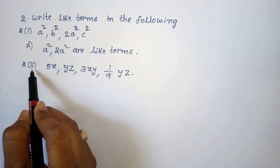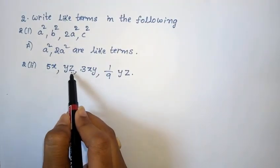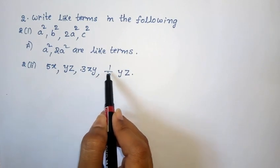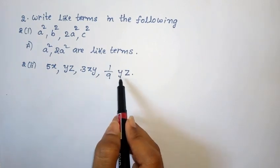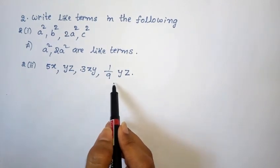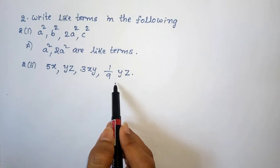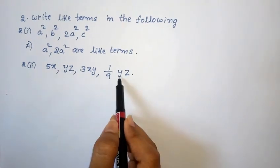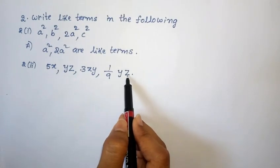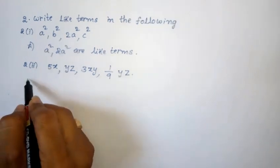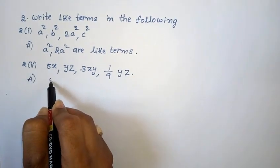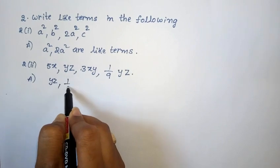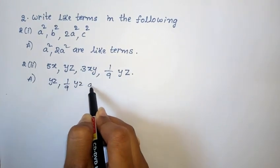Next, 2nd Roman, 2nd one: 5x, yz, 3xy, 1/9 yz. In these four terms, find like terms. The second term is yz and the fourth term also has variables yz only. Like terms means same variables with equal exponents. So yz and 1/9 yz are like terms.